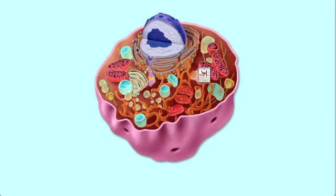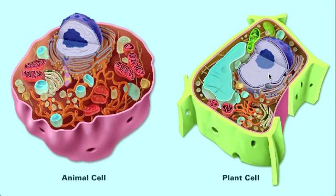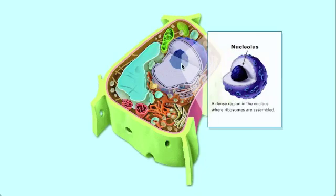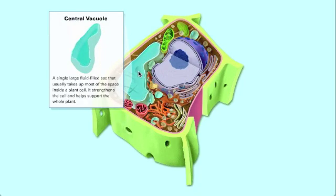Let's move on to plant cell. Plant cells also have a nucleus in it, like we already talked about. The new thing is central vacuole, a single large fluid sac that usually takes up most of the space inside a plant cell. It strengthens the cell and helps support the whole plant.